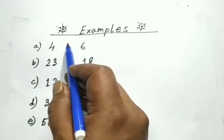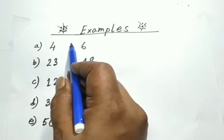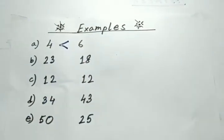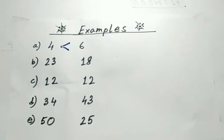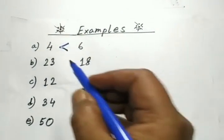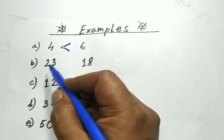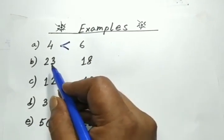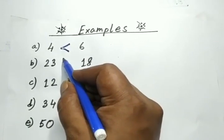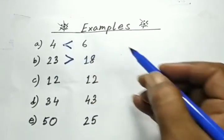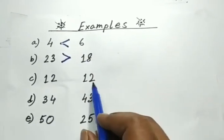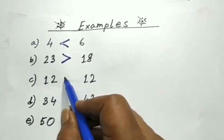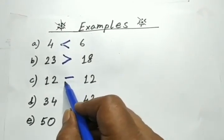So the open face always will be facing to the bigger number. Next, 23 and 18. 23 is bigger so we'll use greater than sign. 12 and 12, both are same, so we are going to use is equal to sign.